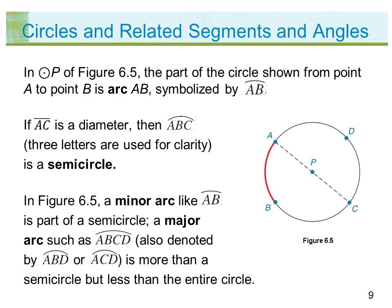In figure 6.5, a minor arc, like arc AB, is part of a semicircle. A major arc, such as arc ABCD (also denoted arc ABD or arc ACD), is more than a semicircle but less than the entire circle.